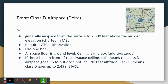Next is Class D — Class Delta airspace. Generally the airspace goes from the surface to 2,500 feet above the airport elevation, charted in MSL. It does require ATC authorization. One important point to add to your flashcard: when the control tower closes on a Delta airspace, the airspace turns into a Class Echo or a Class Echo and Class Golf airspace — you will be tested on this. The correct answer is Class E, or Class E and G, but not just a Class G by itself.